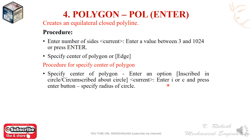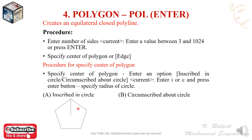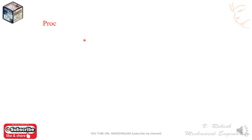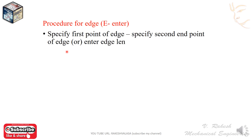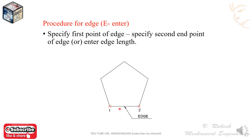Suppose you want inscribed circle — type I in the command prompt. The inscribed circle means the polygon fits inside the circle. The circumscribed circle means the circle fits inside the polygon. For the edge option, shortcut key E, Enter: specify the first point of the edge, then specify the second endpoint or enter the edge length.